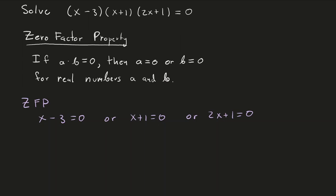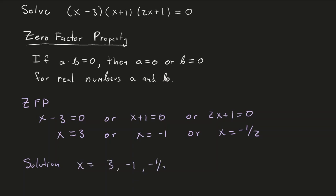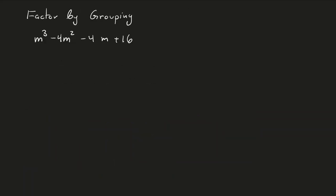We solve each factor for x: x minus 3 equals 0 gives x equals 3; x plus 1 equals 0 gives x equals minus 1; 2x plus 1 equals 0 gives x equals minus one half. So the solution set is {3, -1, -1/2}. The curly bracket notation means it's the set containing these three solutions. Once you factor, you use the zero factor property to write down your solutions.